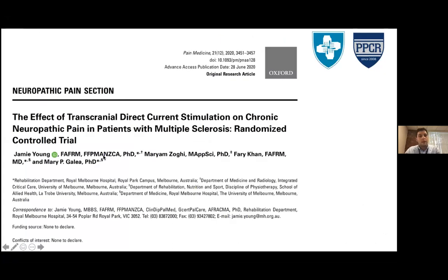The article we are discussing today is titled 'The Effect of Transcranial Direct Current Stimulation (tDCS) on Chronic Neuropathic Pain in Patients with Multiple Sclerosis' — a randomized clinical trial. The intention is to discuss the methodology and findings of this trial. Please open your mic if you have questions or comments.